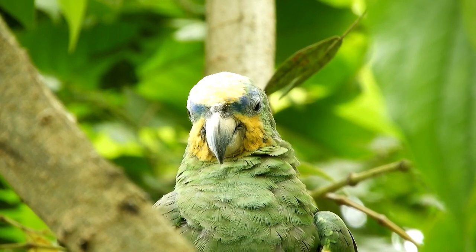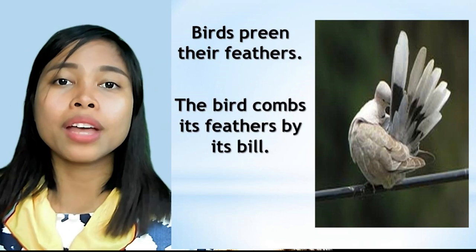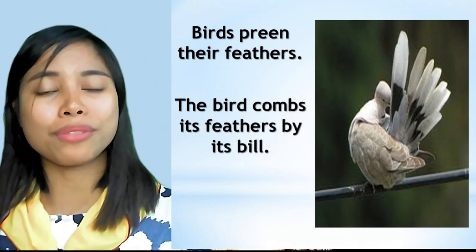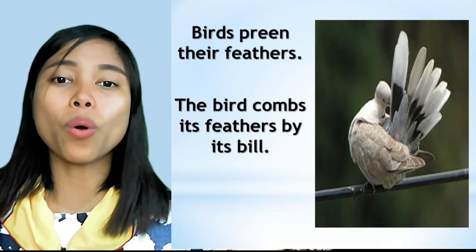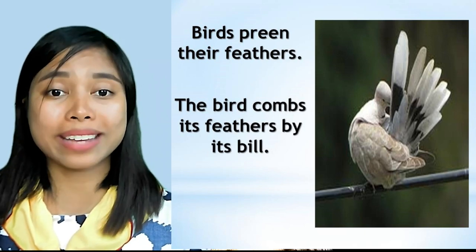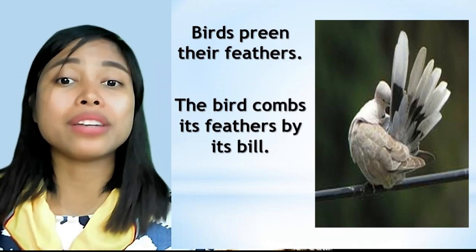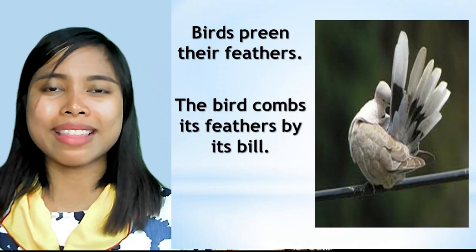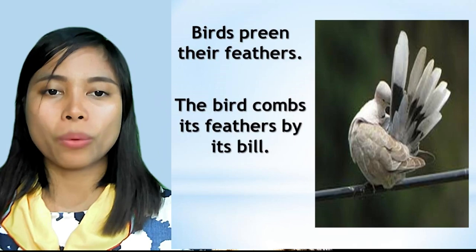Birds preen their feathers using their bill. These feathers are oiled in order to shed rain. The oil gland is just above and in front of the root of the tail. The bird will squeeze the gland and the oil comes forth.